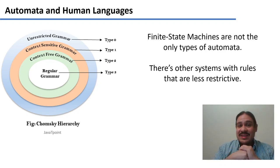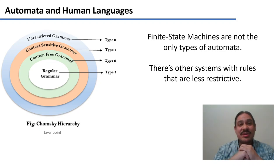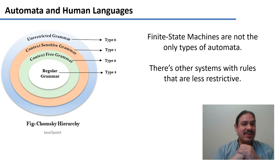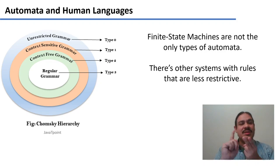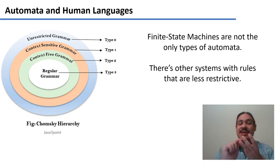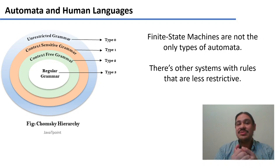Type 3 is a regular grammar, which is the kind of grammar that a finite state machine can describe. We also have other types of grammars: context-free, context-sensitive, and unrestricted, or computationally innumerable.